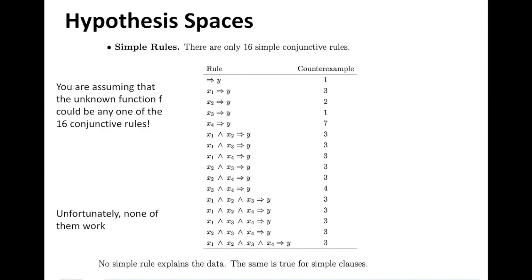That is why we need hypothesis spaces, because hypothesis spaces tells us where to look. It tells us you don't have to consider all these 2 raised to 2 raised to 10,000 functions, but look at this subset of functions. And from this subset, find the one that best approximates your underlying function f.